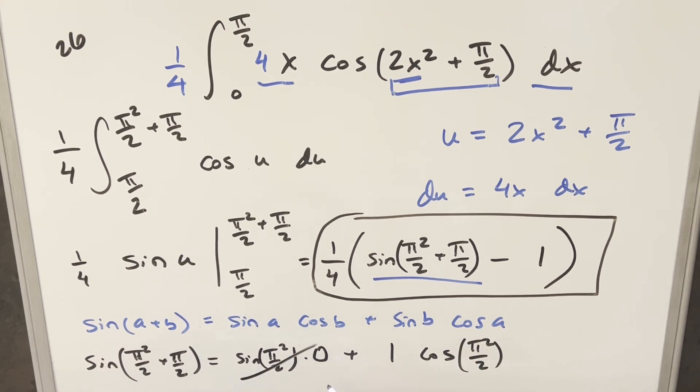This part's gone because of the 0. This part's just a 1. And so what we're left with for this expression is cosine pi squared over 2 that we can take and put back right there.